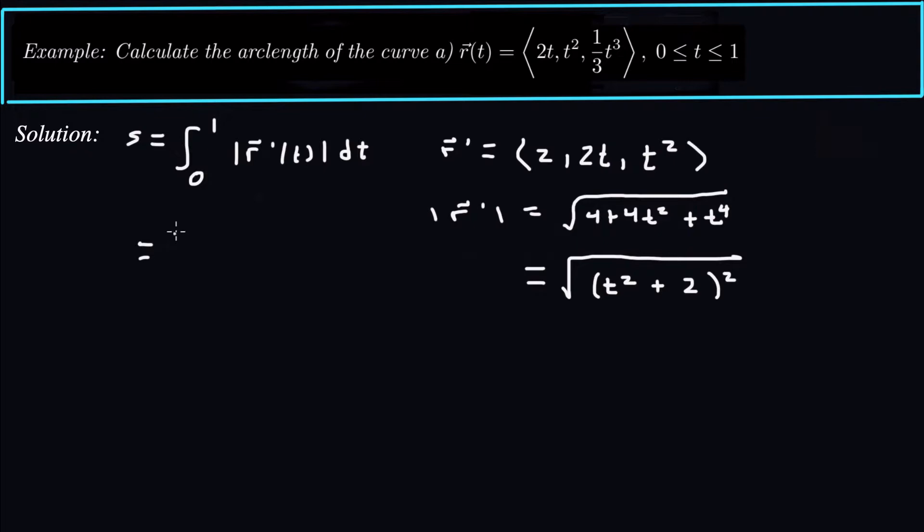So this is going to be the integral from 0 to 1. So t squared plus 2. Otherwise, I'd have to take the absolute value. I don't have to take the absolute value here. So that's my integrand, t squared plus 2 dt. That's super easy to integrate. That's just t cubed over 3 plus 2t from 0 to 1. Plug those in. Actually, pretty straightforward. You get 1 third plus 2, which is going to be 7 thirds.